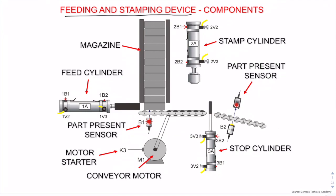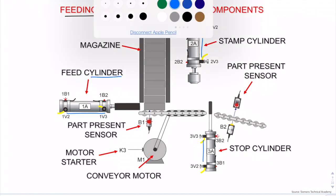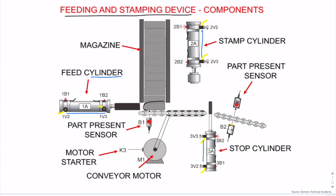Now let us have a look at the feeding and stamping machine. As shown, the machine is now in home or start position. The very first thing to look for is the type and number of actuators. These three are called cylinders — an actuator that does work motion on the load. The load here is the workpiece inside the magazine. The three cylinders are pneumatic linear type labeled as actuator 1, actuator 2, and actuator 3, with work motions of feed, stamp, and stop.